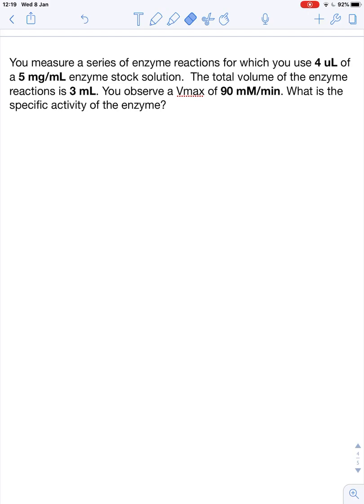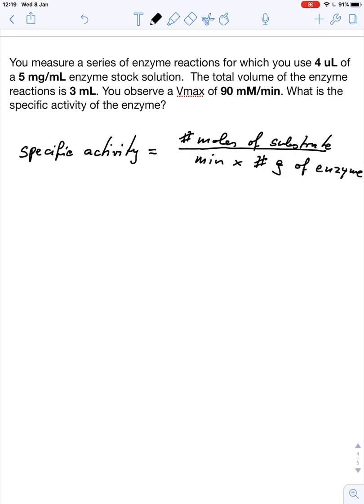So let's just quickly recap what specific activity actually means. Specific activity is usually defined as the number of moles of substrate that are turned over per minute by a certain number of grams of enzyme. And with this information we can very easily get these different numbers that we are looking for.